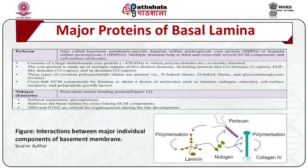Perlecan, also called basement membrane-specific heparan sulfate proteoglycan core protein or HSPG, is also referred to as heparan sulfate proteoglycan II. Multiple domains help to bind and cross-link several ECM components and cell surface molecules, binding to about a dozen molecules such as laminin, nidogen, cell surface receptors and polypeptide growth factors. Nidogen, also referred to as entactin, are polyvalent matrix-binding sulphated monomeric glycoproteins that help stabilize the basal lamina by cross-linking ECM components.